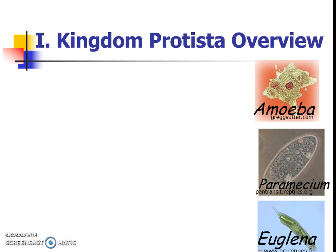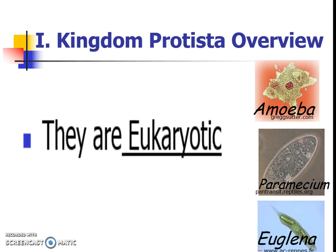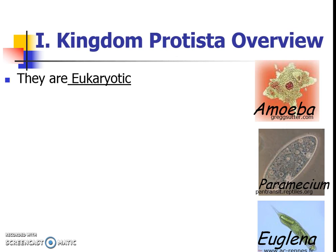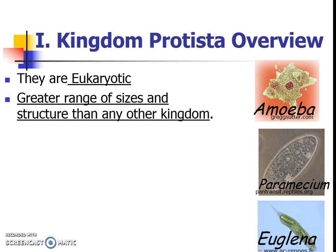Let's jump in. What is this kingdom all about? Well, it's really important to remember that these guys are eukaryotic. What does that mean? Do they have a nucleus or do they not? They definitely do if they're eukaryotic. And what's really cool is that they're just so diverse. There's a greater range of sizes and structures than most of the other kingdoms. They're kind of this weird category where we have such a cool mixture of sizes and shapes. Because of that, there are lots of different types of things. Some of them are heterotrophs, some of them are autotrophs.